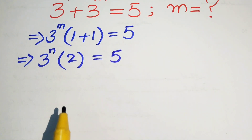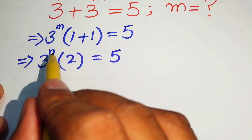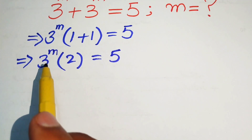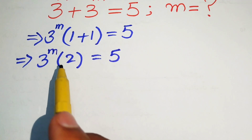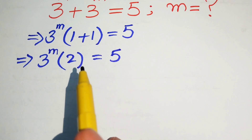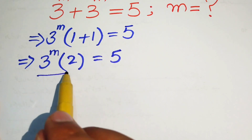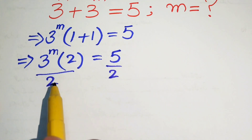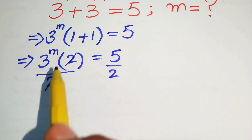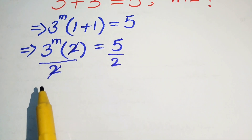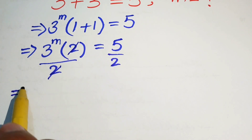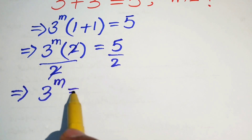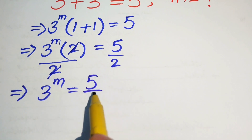Now we need to find the value of m. We move the 2 to the right hand side by dividing both sides by 2. The 2s cancel, and we get 3 to the power of m equals 5 over 2.